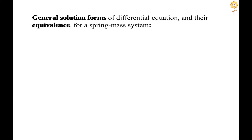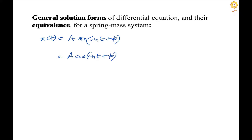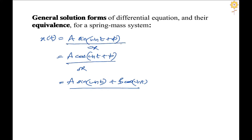Now we look at the general solution forms of the differential equation and their equivalence for a spring-mass system. We have seen three expressions of the solution. The first is A*sin(omega_n*t + phi), which is the generalized formula covering any phase difference. Writing simply A*sin(omega_n*t) corresponds to one specialized case of initial conditions, so the first form is more general. A second form is A*cos(omega_n*t + phi), and a third form is A*sin(omega_n*t) + B*cos(omega_n*t), which has no explicit phase term. All three forms are equivalent.